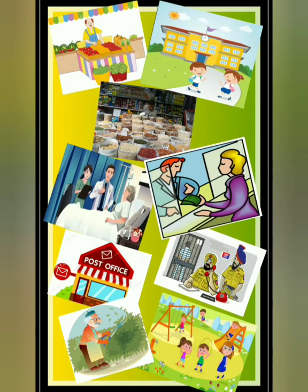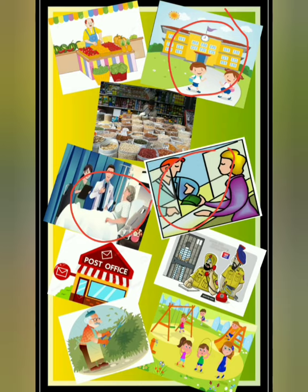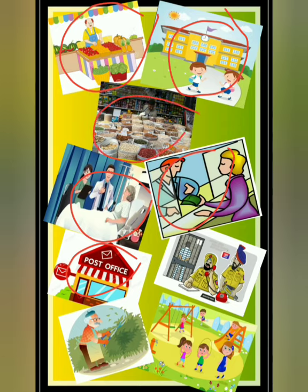सबसे पहले मैं आपको कुछ pictures दिखाना चाहूंगी। This is a picture of a school. This is a picture of a bank. It is a picture of a hospital. It is a picture of a post office. It is a picture of a green grocer. And it is a picture of a grocer. It is a picture of a police station. A gardener — you can see the gardener in the park. And it is a picture of a park.